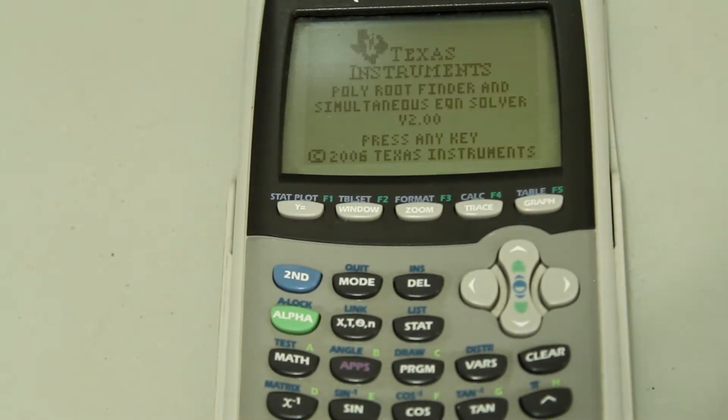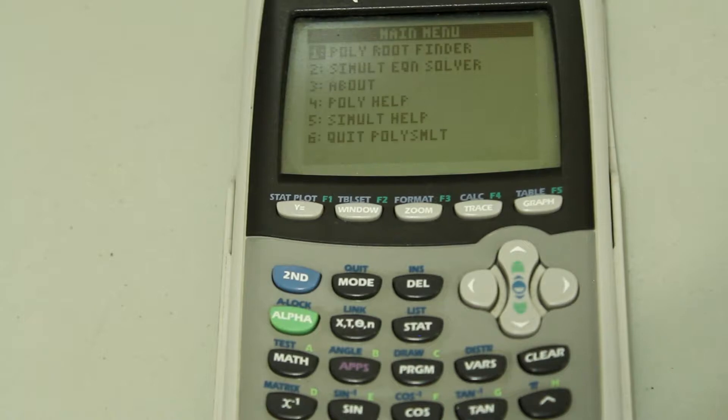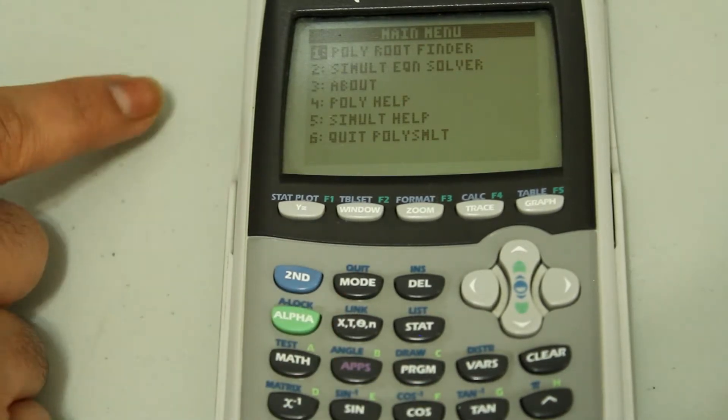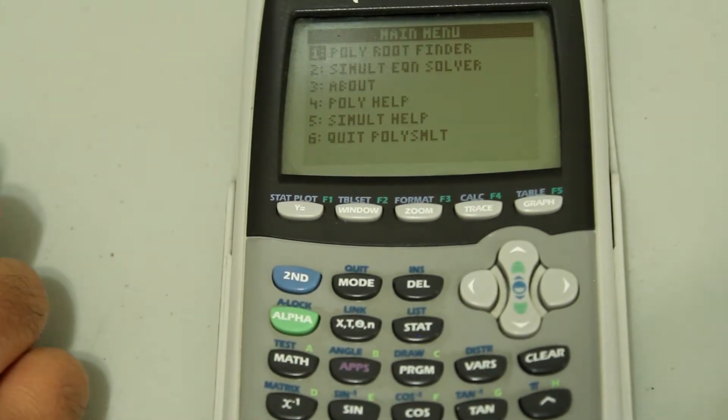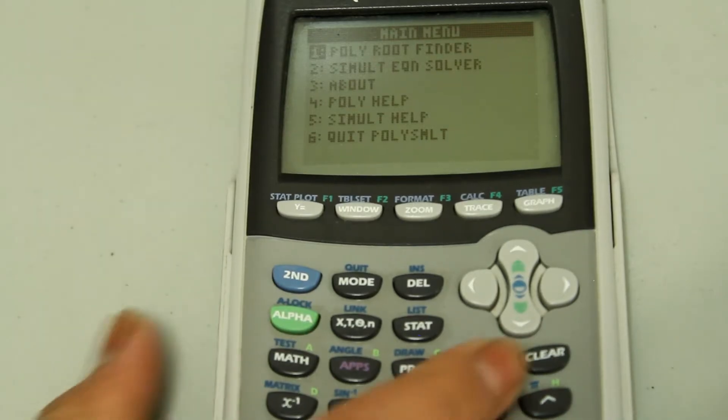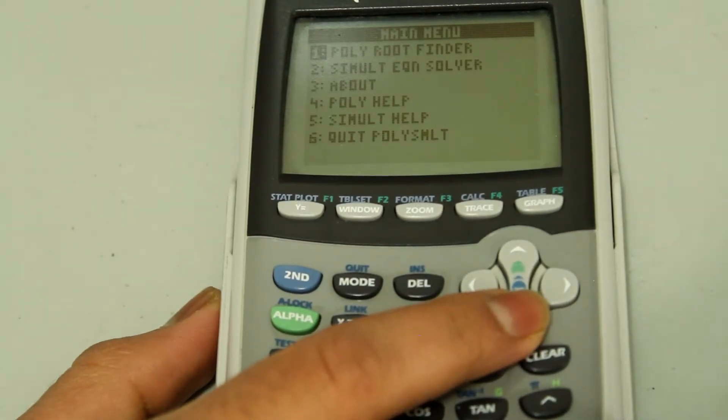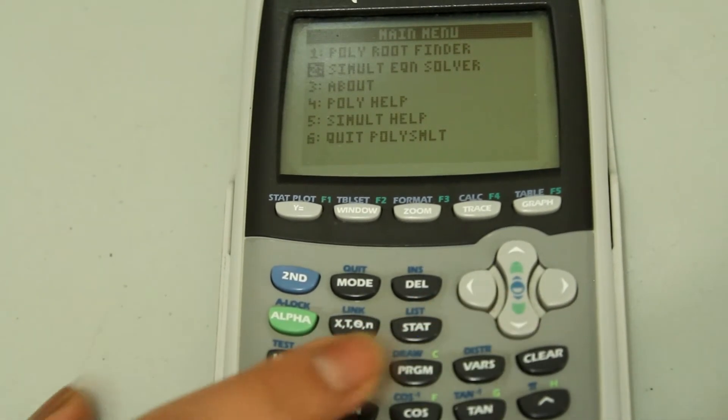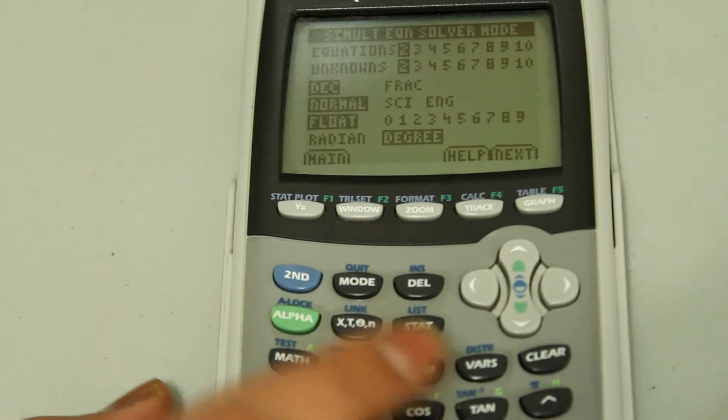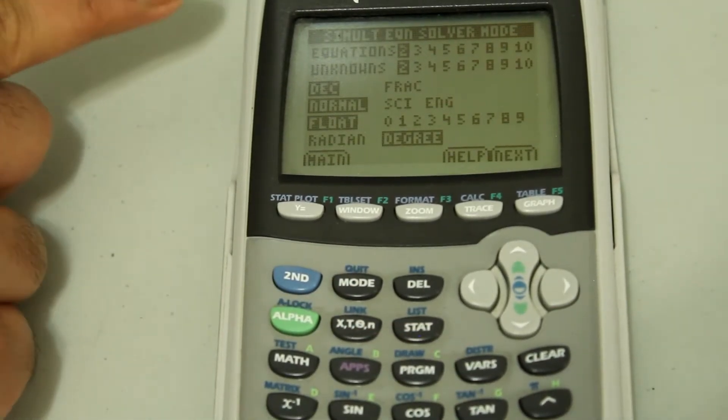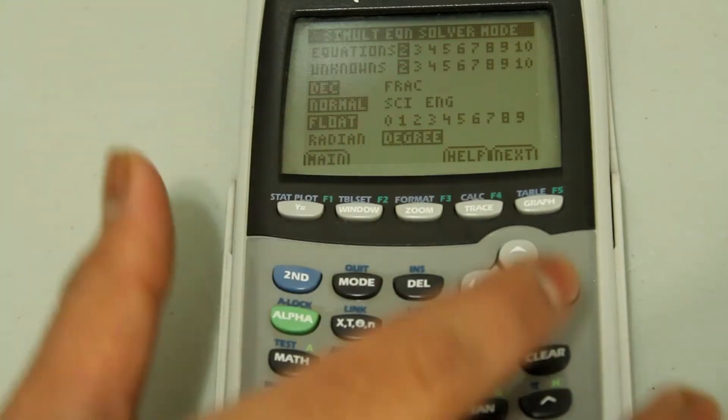And that takes you to a screen. Just hit any key to continue. That takes you to a screen that looks very similar to the one I just showed you on the TI-84 Plus CE. So, go down to Simultaneous Equation Solver. Hit enter. And now we're leaving the number of equations at 2 and unknowns at 2. Hit next.